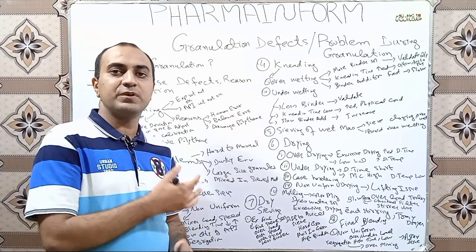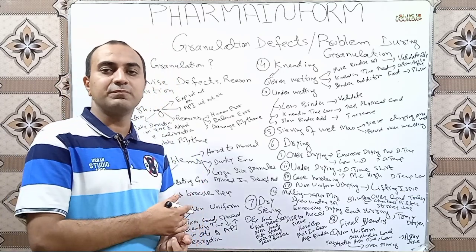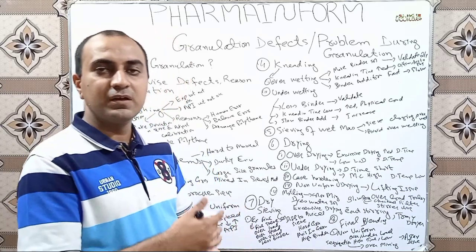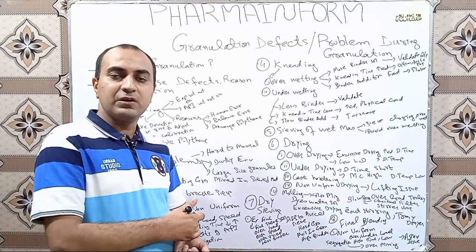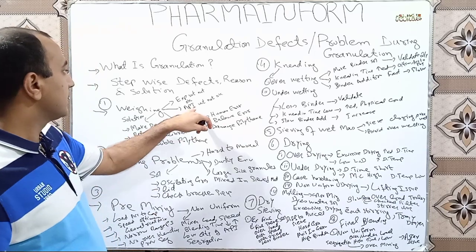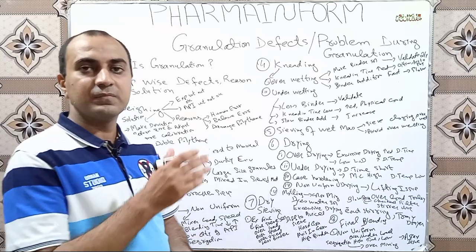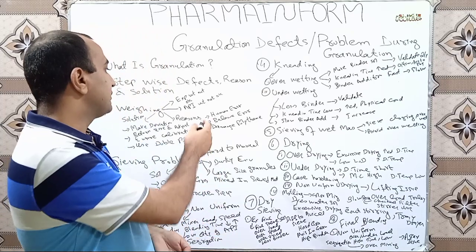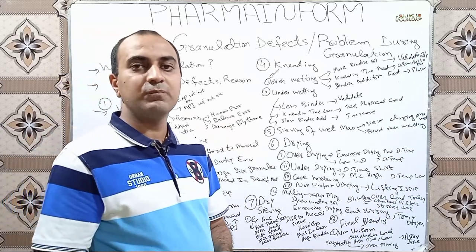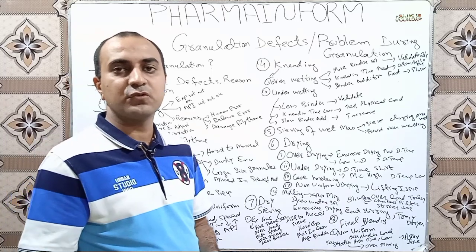The first step in wet granulation is weighing. The possible problems we may face during weighing are: the first problem is low weight of excipients, meaning you may receive excipient weight less than mentioned in the shop order or BMR. The weight of API or active pharmaceutical ingredient may also be low as defined in the BMR or shop order. Reasons include human error during dispensing, balance error, or rupturing of the polythene bag.